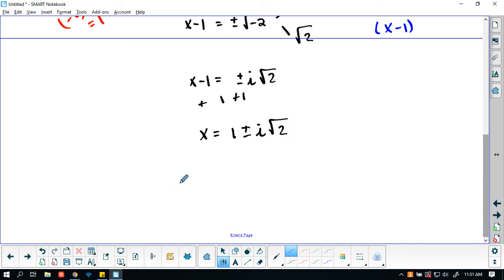This does have two solutions: x = 1 + i√2, and the second solution is x = 1 - i√2. But there you have that.